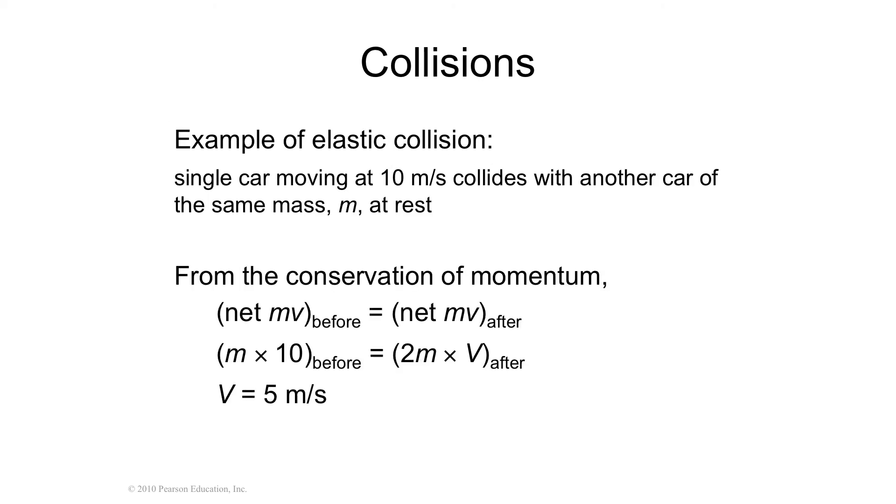You see this is going to be slightly different because now the cars have the velocity of the first, but they have the mass of both of them together. So that's going to be slightly different. So let's do an example. A single car moving at 10 meters per second collides with another car of the same mass M at rest. So the masses are the same. So let's just say it's 10M and 1M. If you know that momentum is conserved, then the whole amount of momentum before the collision is equal to the whole amount of momentum afterwards.